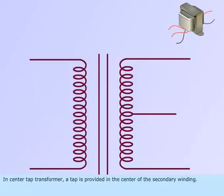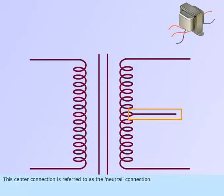In Center Tap Transformer, a tap is provided in the center of the secondary winding. This center connection is referred to as the Neutral Connection.